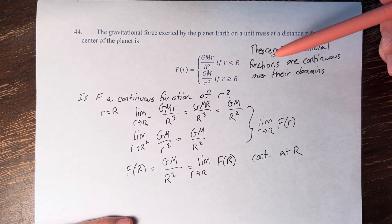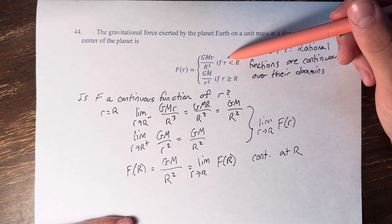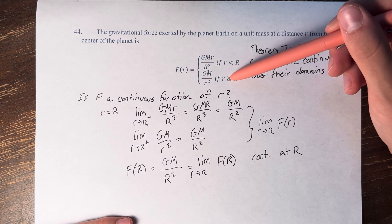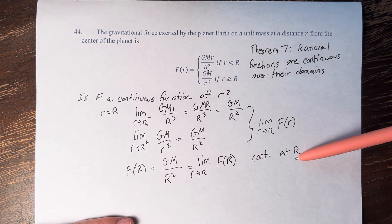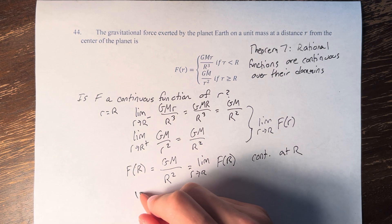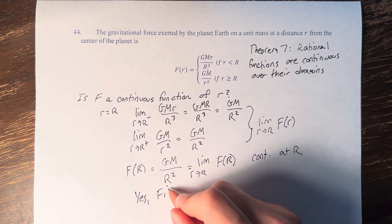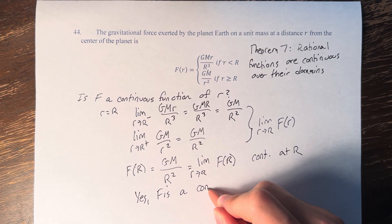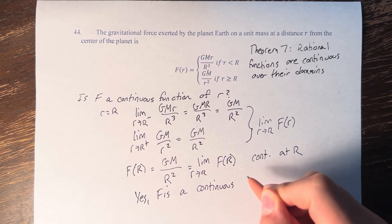because if we are less than big R, this function is continuous. If we're greater than big R, this function is continuous. If we're at R, we just proved that it's continuous. We can see that, yes, F is a continuous function of r.